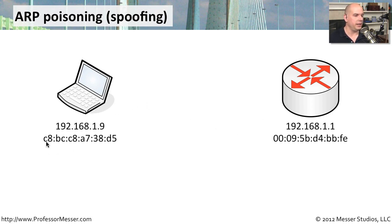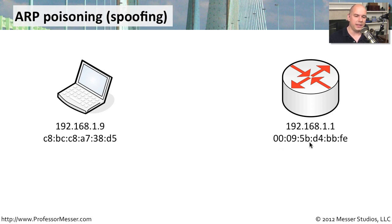Let's say we are this workstation at 192.168.1.9 — here's the MAC address for that workstation. On the network is a router, and any time we need to go to the internet we go to that router, which is 192.168.1.1. Its MAC address is shown here as well. These MAC addresses become incredibly important when somebody tries to perform ARP spoofing or ARP poisoning.